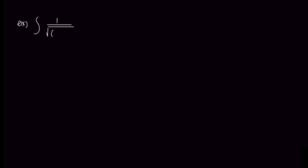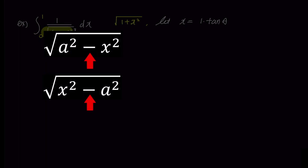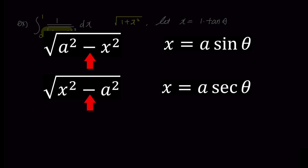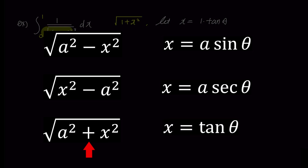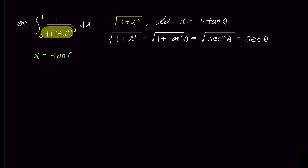Let's examine how trigonometric substitutions work in definite integrals. Since we have a square root of 1 plus x squared in the denominator, let's substitute x with tangent theta and simplify. When there is a plus sign inside the square root, we substitute with tangent theta. The square root of 1 plus x squared becomes the square root of 1 plus tangent squared theta, which equals the square root of secant squared theta, simplifying to secant theta. Differentiating x equals tangent theta gives dx equals secant squared theta d theta.